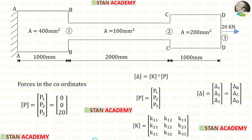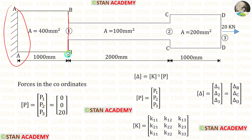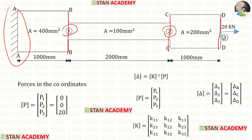Before starting the analysis, let us define the coordinates. Section AA is fixed, so there will be no displacement. In sections BB, CC, and DD, there will be displacements. Let us keep section BB as the first coordinate, section CC as the second coordinate, and section DD as the third coordinate.